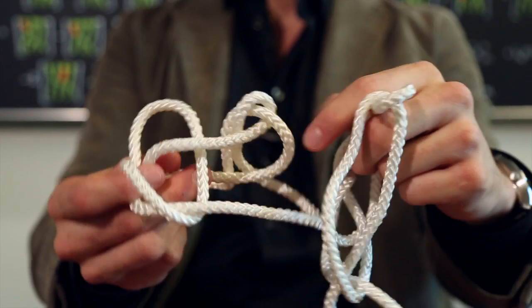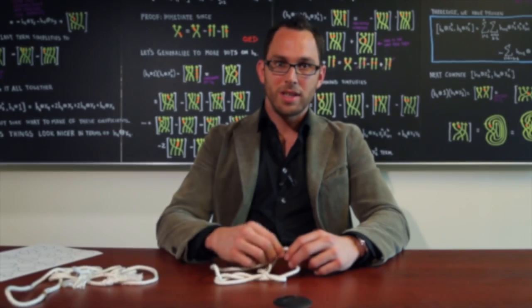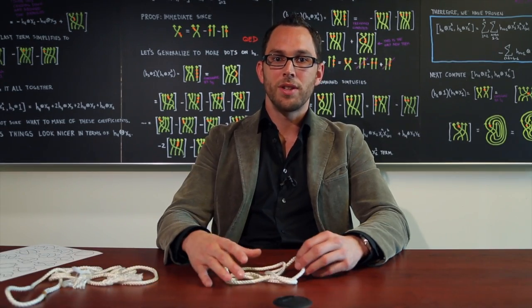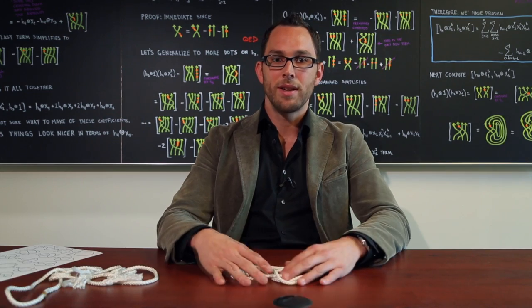Where did this problem come from? Why on earth did people start thinking about knots? You might imagine it's an interesting curiosity to sort of tell whether two knots are the same, but knot theory is one of our very basic tools in understanding surfaces and their properties.